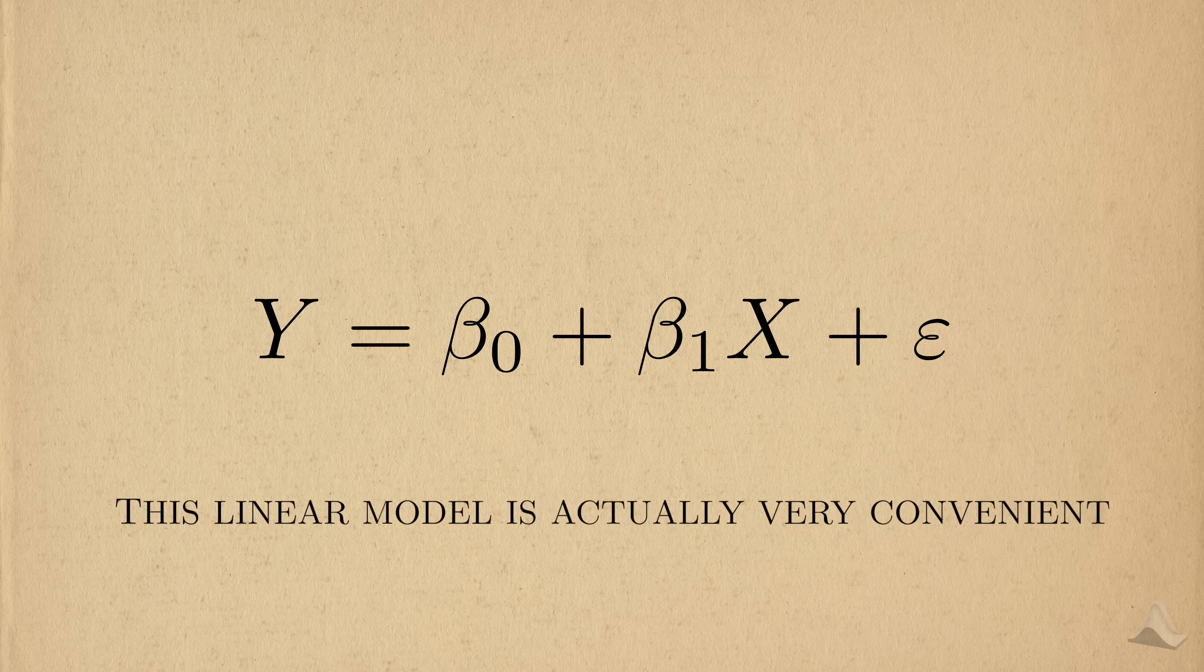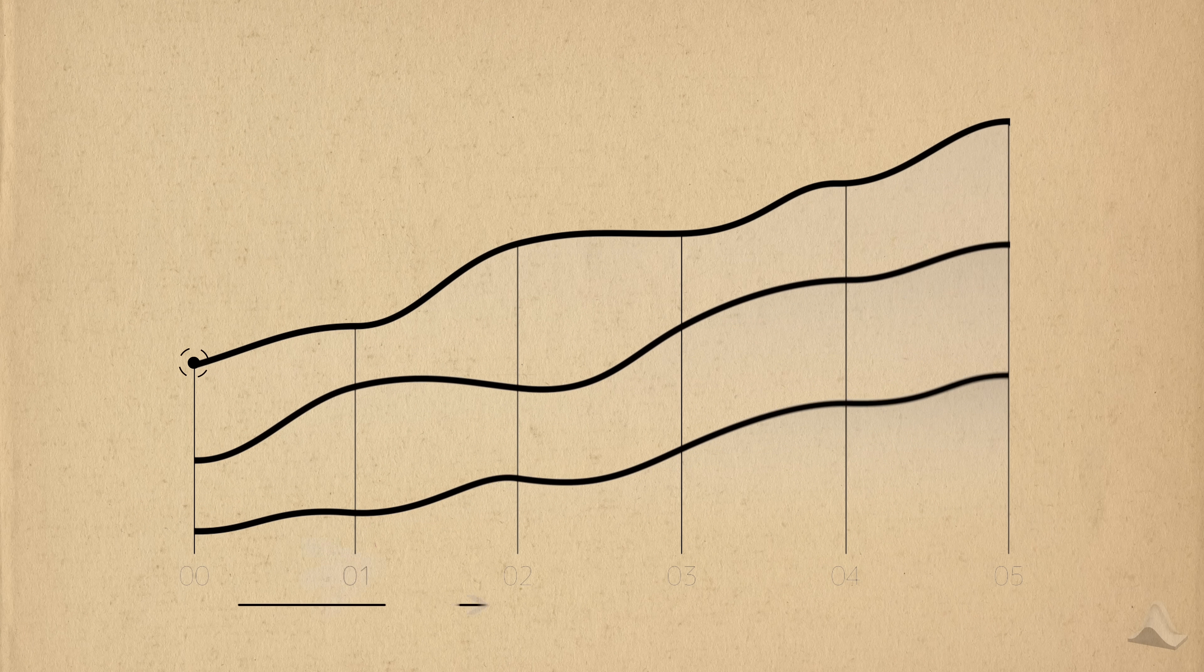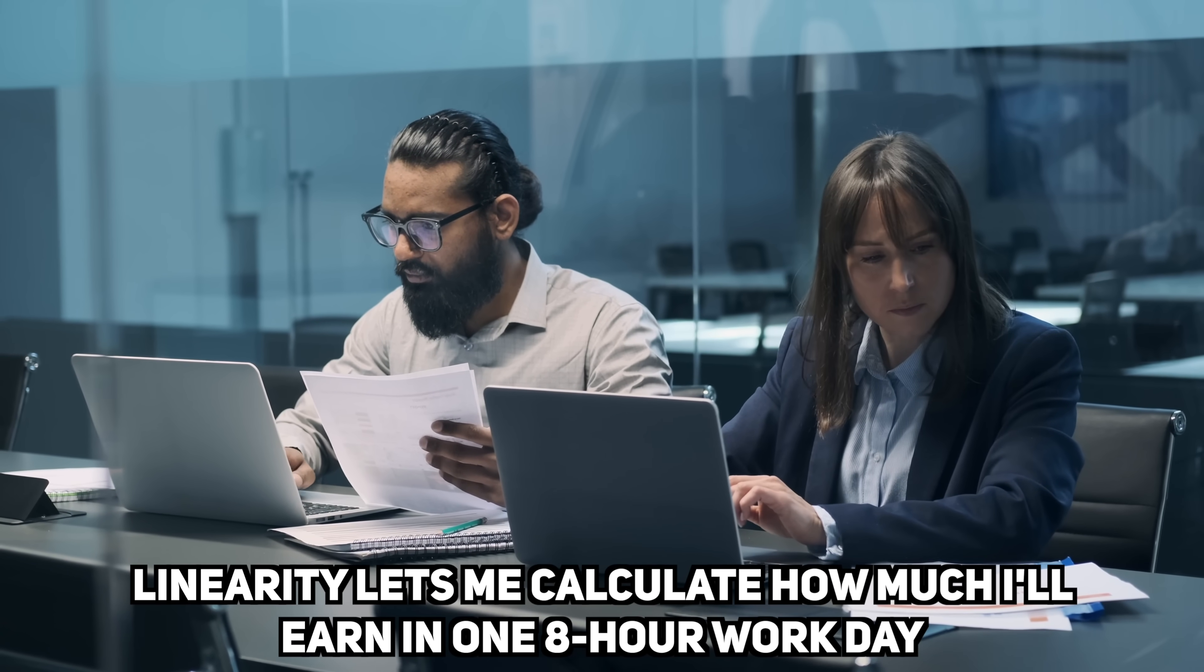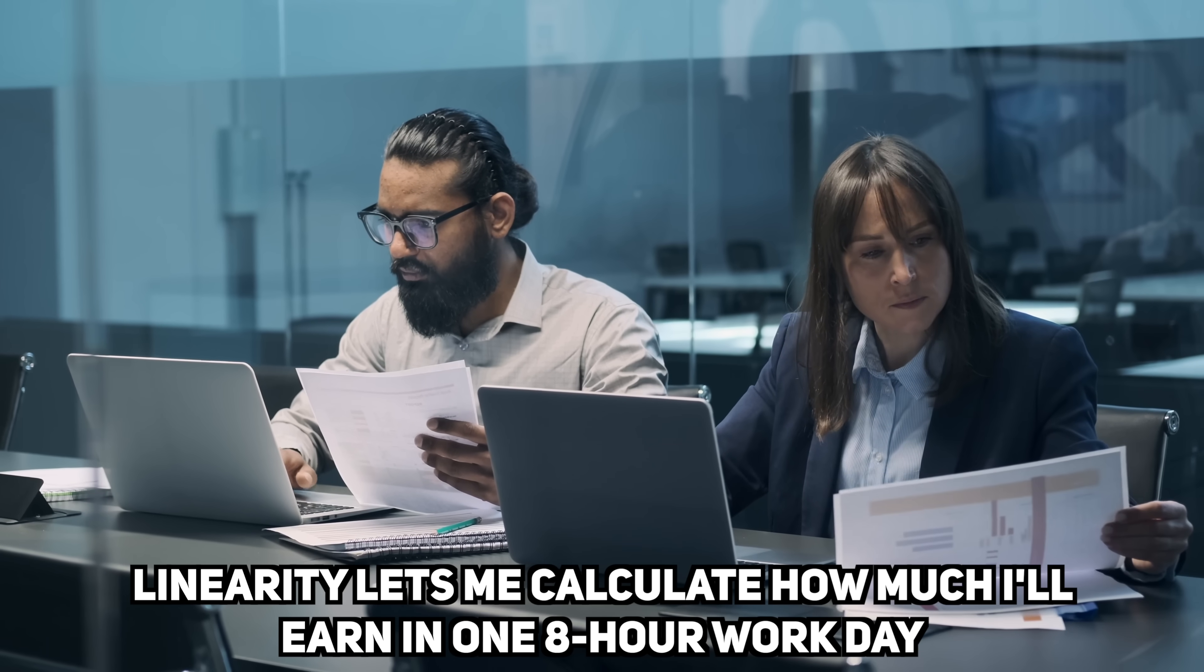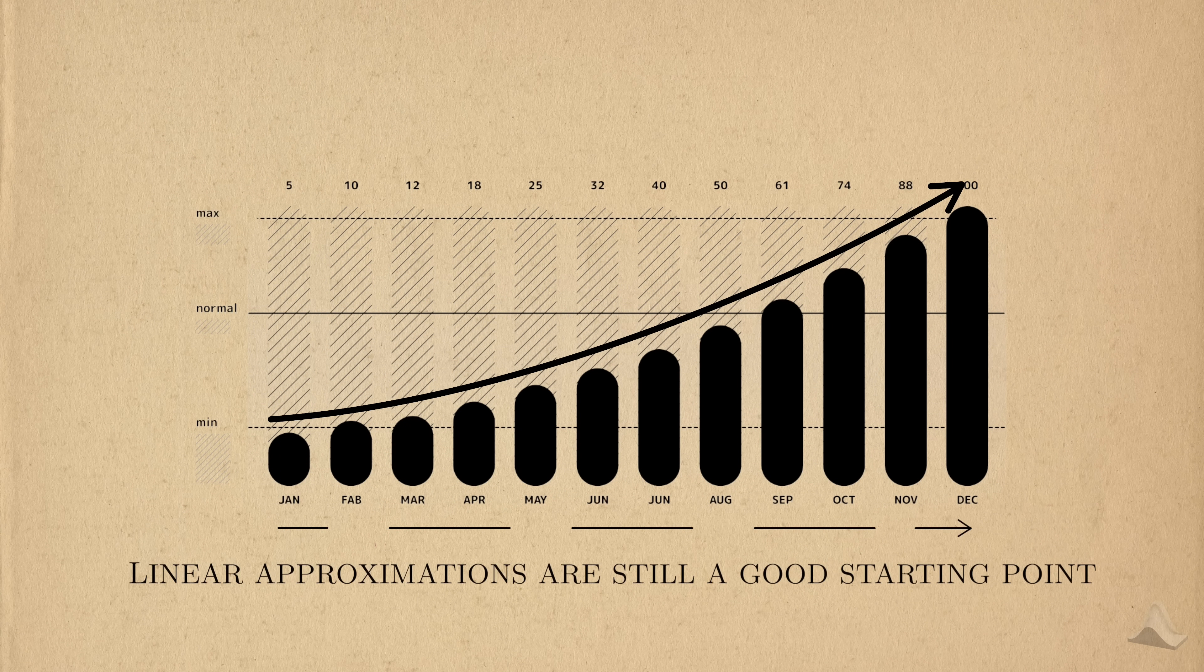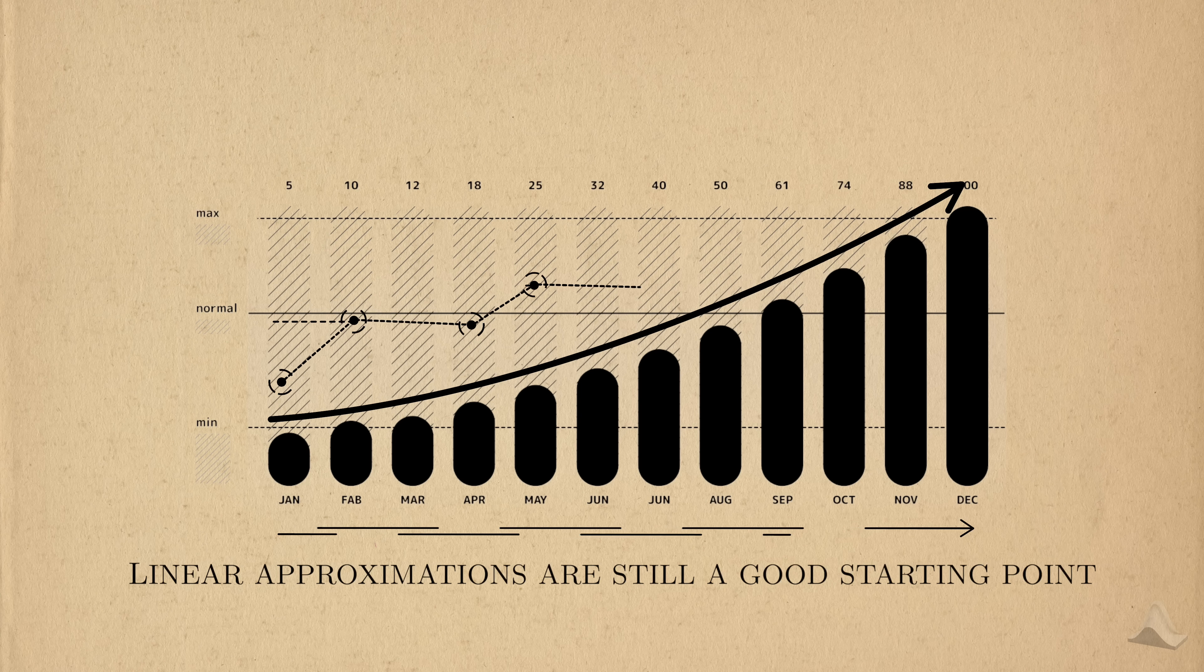This linear structure is actually a very convenient model. Humans often think and experience things in linear terms. If my wage is $30 an hour, then linearity tells me that I can roughly predict how much I'll earn in an 8 hour workday. Even if something isn't precisely linear, a linear approximation is often an acceptable starting point for developing more sophisticated models.